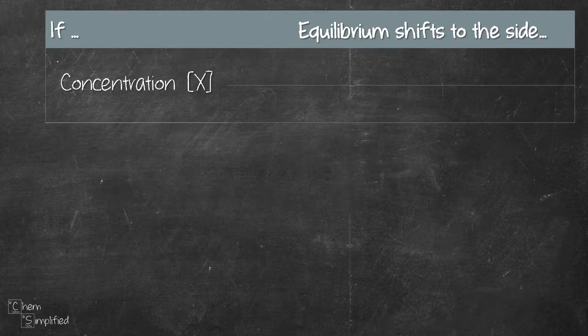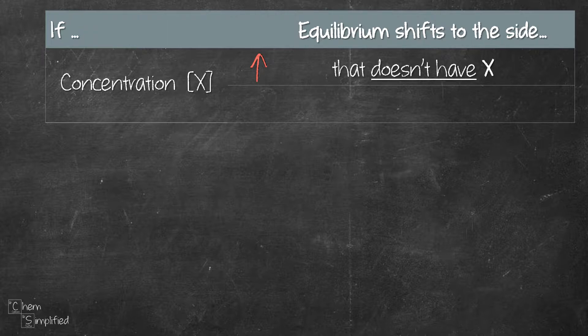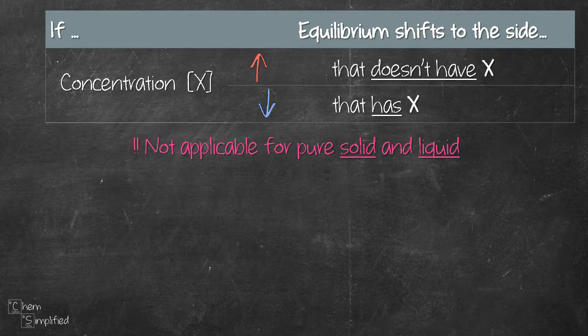Our first stress is concentration. If the concentration of a substance X is increased, the equilibrium will shift to the side of the reaction that doesn't have X. If the concentration of X is decreased, it will shift to the side that has X. An important note is that this shift is not applicable when the substance is a pure solid or liquid — adding or removing a solid or liquid from a system at equilibrium will have no effect on the equilibrium position, so there will be no shift.